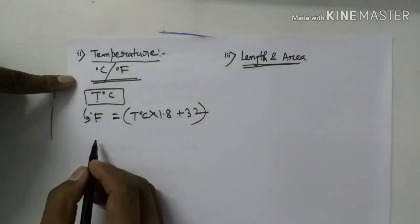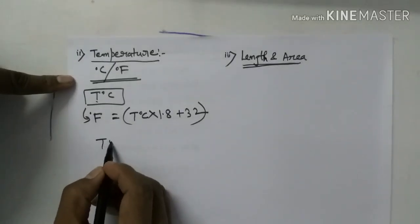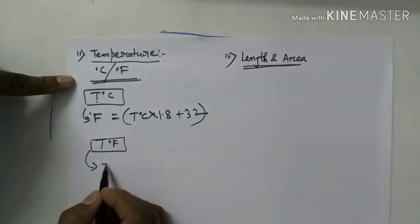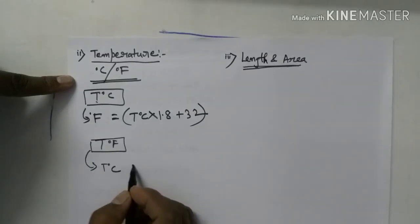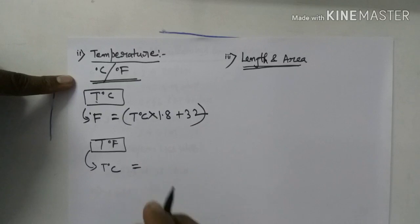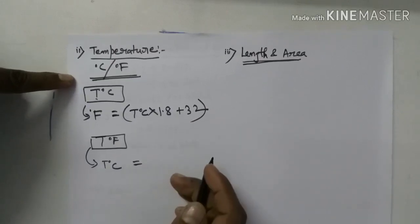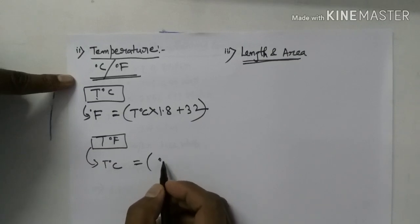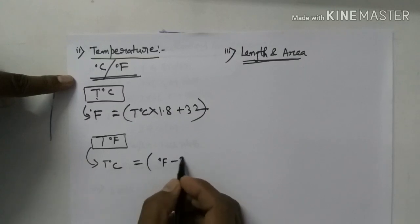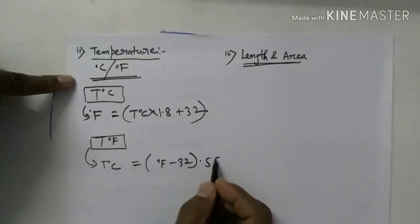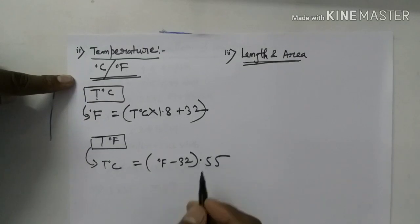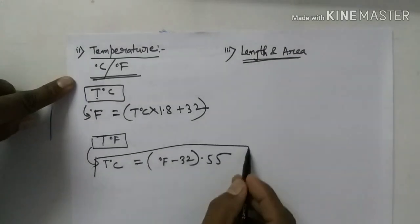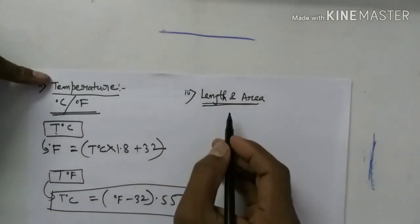If you have the temperature in degrees Fahrenheit and need to convert it to degrees Centigrade, simply take the Fahrenheit value, subtract 32, and then multiply by 0.55. That gives you the Centigrade value. This is the temperature conversion formula you need to remember.